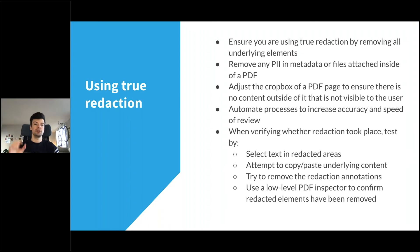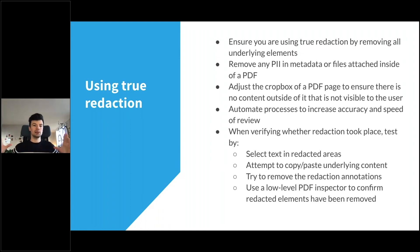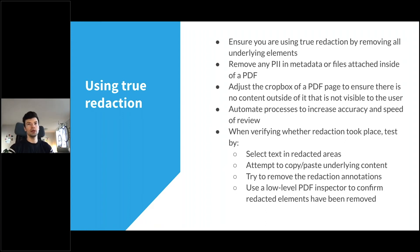Sometimes there could be sensitive information outside of the visible region. To combat that, we can adjust the crop box of a PDF page to ensure there's no content not visible to the user — perform a search through the document and check if anything falls outside the specified crop box, and if it does, remove it. We really want to help users spend more time on valuable tasks and outsource automation tasks to an automated process to increase accuracy and speed of review.